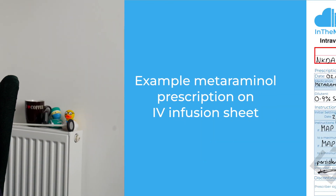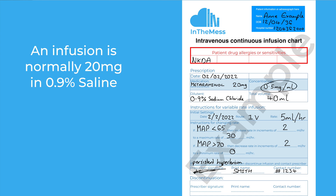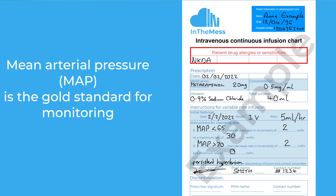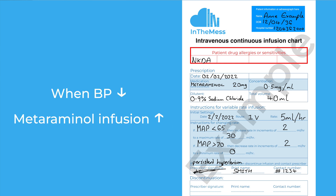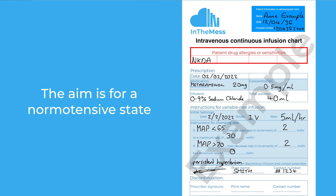A prescription for metraminol can look quite confusing at first, but it's useful to know the basics. It's normally made up in a 20ml syringe to a concentration of 0.5 milligrams per ml, and started at around 5 millilitres per hour — that's 2.5 milligrams per hour. On the prescription chart there is an upper and lower limit of mean arterial pressure set by the prescriber. If the BP reaches the lower limit, nurses will increase the rate of infusion; if it reaches the upper limit, they will decrease it to maintain a normotensive state.